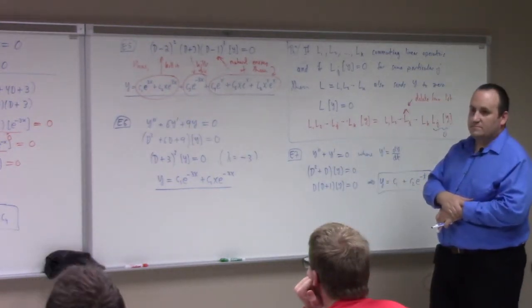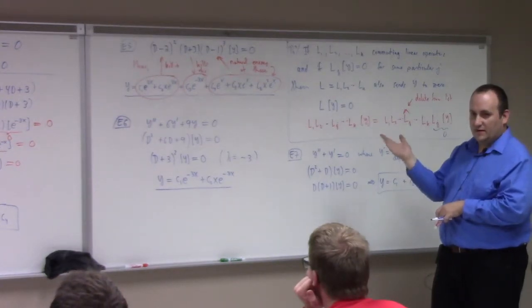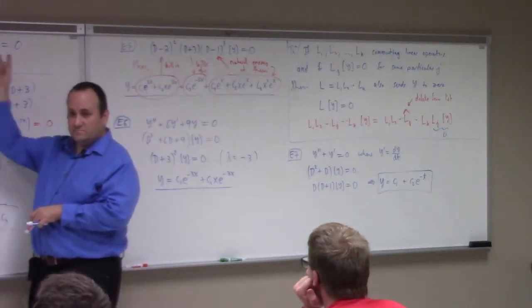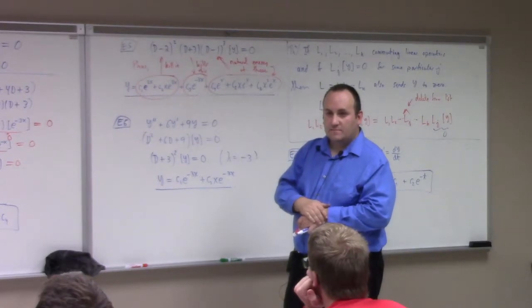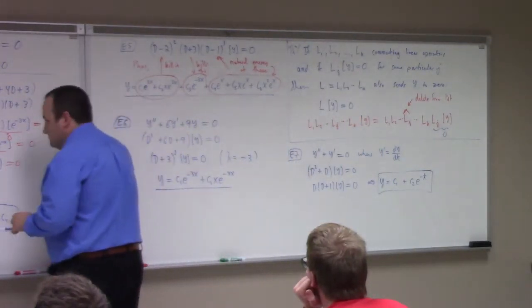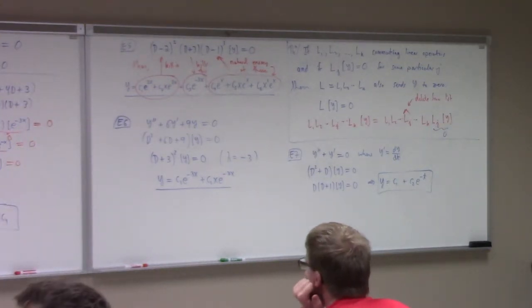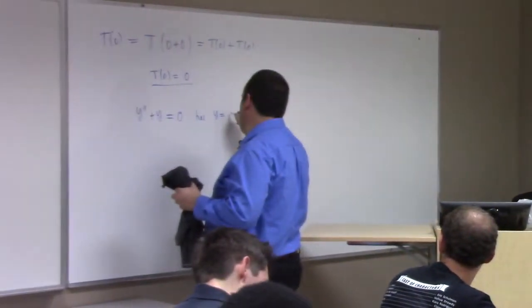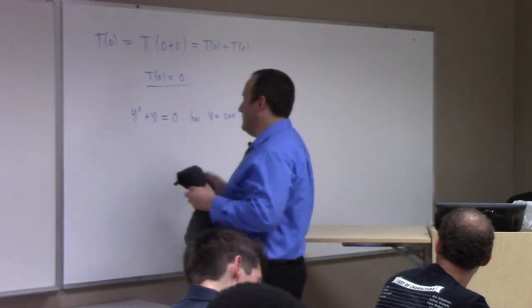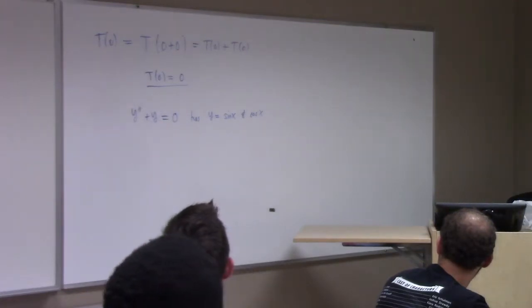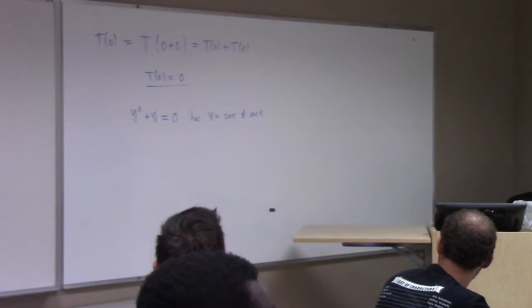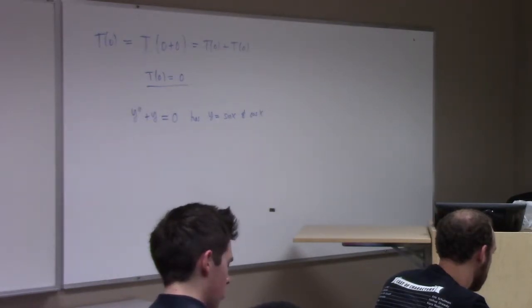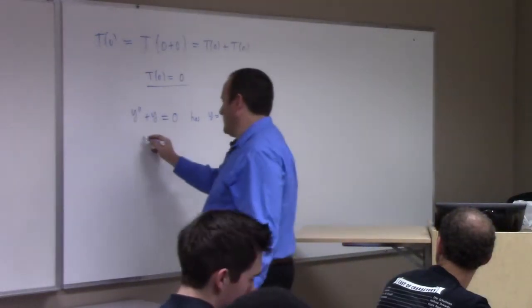We can keep doing this, and I hope you get the idea: as long as the polynomial we're working with has only real roots, we're okay. But what did we work out the other week? We worked out that y'' + y = 0 has solutions y = sine x and cosine x. I think I derived sine x from that by integrating.